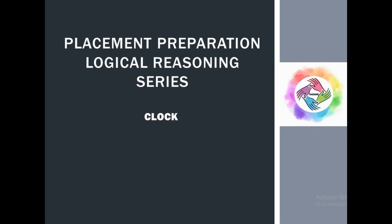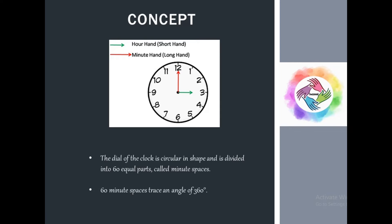Hello friends, we are going to talk about clock-based problems in logical reasoning. In a clock, we have two hands — one small and one long. The small hand represents hours and is called the short hand. The long hand represents minutes and is called the long hand.